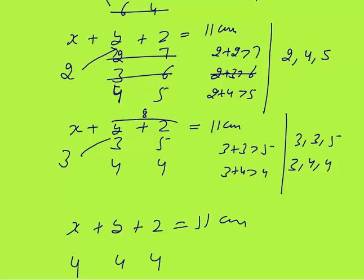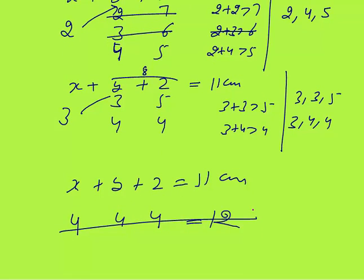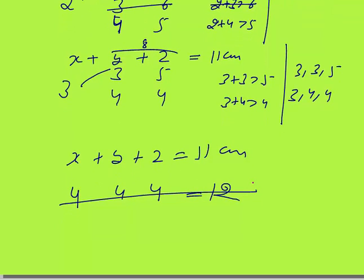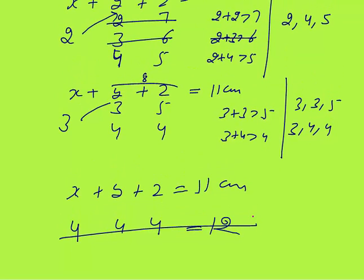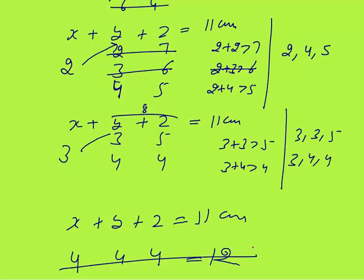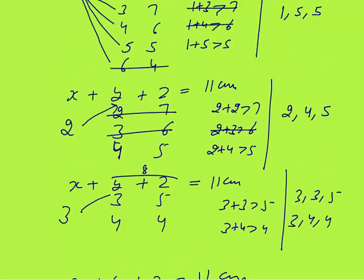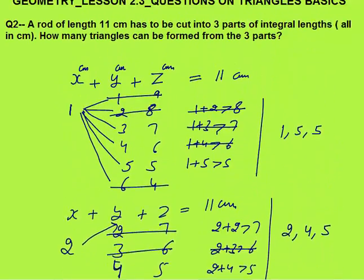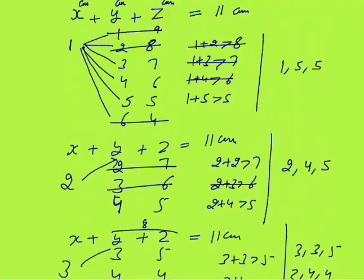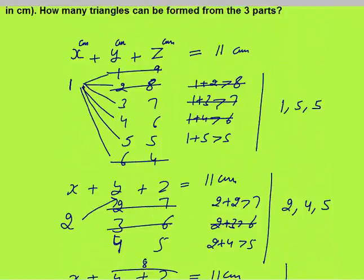When x equals 4, y plus z equals 7, but the minimum value would make x plus y plus z exceed 11 since each side would be at least 4. So possibilities end here. Total: four triangles can be formed. This is an important question that takes at least two to three minutes in an exam, but it is a very good question.